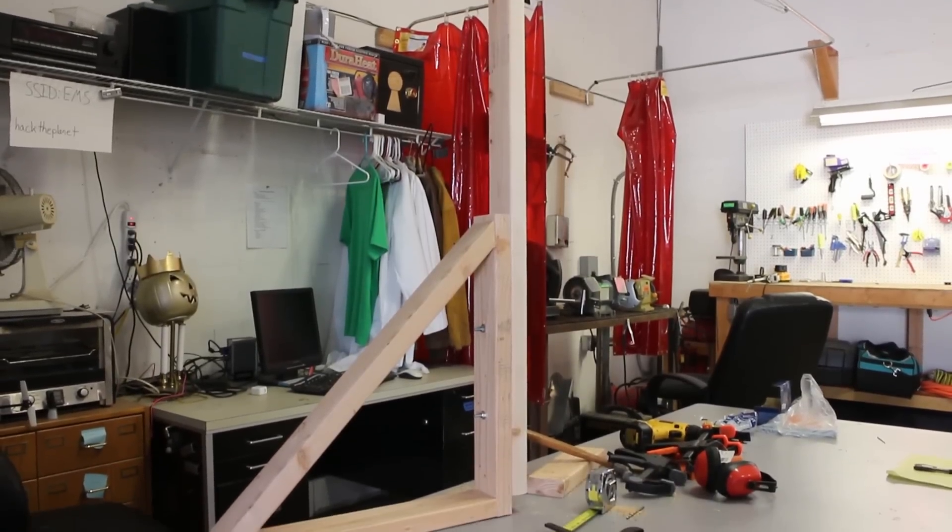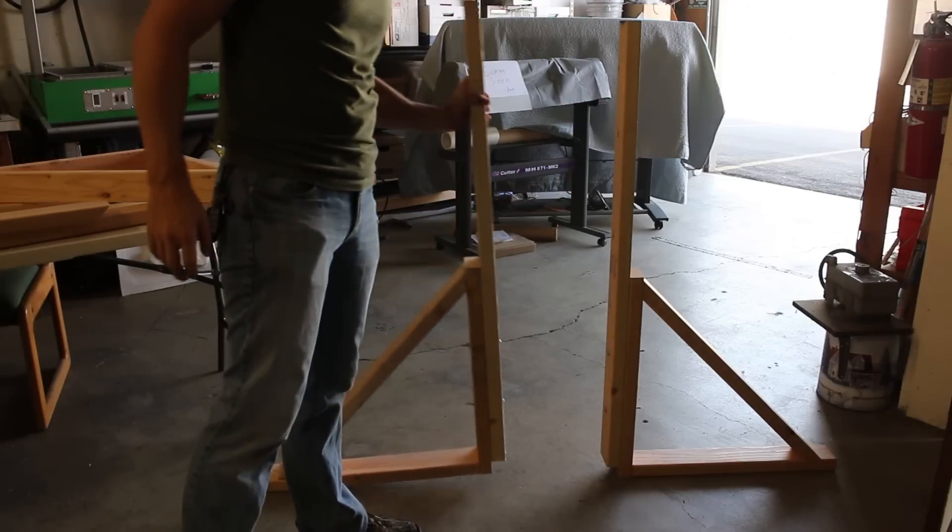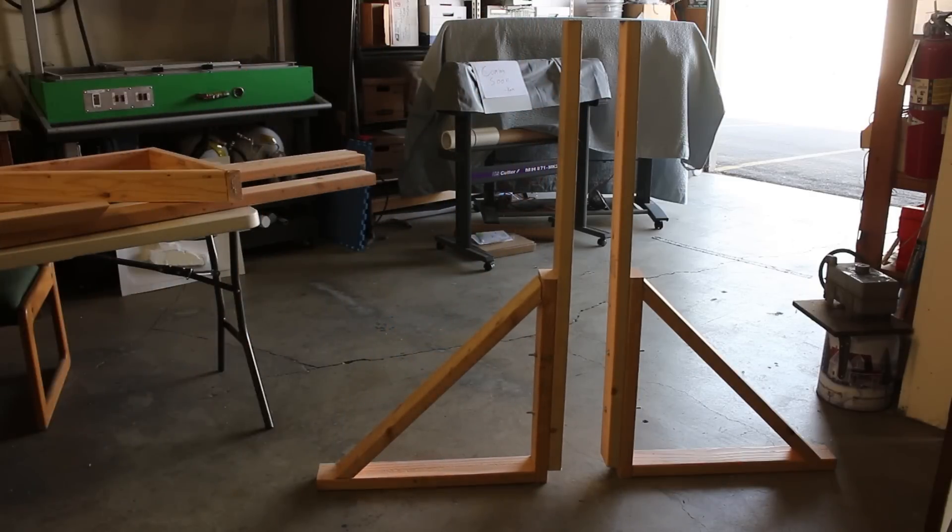Next we'll need to build an identical one of these and then put a leg on the front of one of them and the back of the other. These will eventually be attached together with a small piece of wood at the bottom. But first we need to attach a leg on the front and on the back.